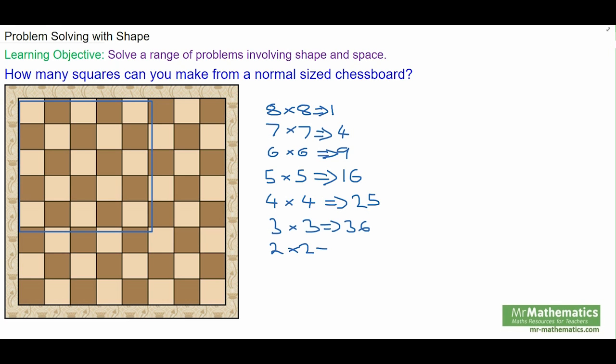For two by two squares, there will be forty-nine. And we know this works because there are sixty-four one by one squares, which fits in the pattern.